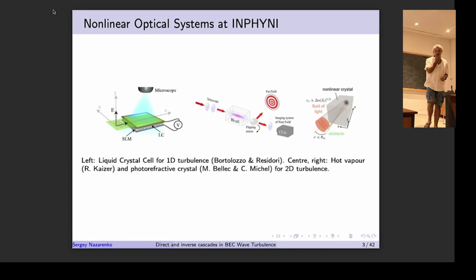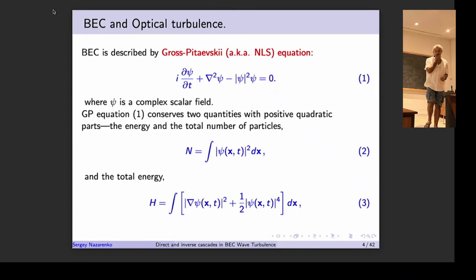It turns out BEC is an almost perfect turbulence laboratory because it's an optically controlled system that can be set up, manipulated, and measured in many versatile ways which are not accessible in classical Navier-Stokes turbulence. It also turns out to be closely related to dynamical systems in nonlinear optics when light propagates through crystals such as liquid crystal, photorefractive crystal, or rubidium hot vapor.